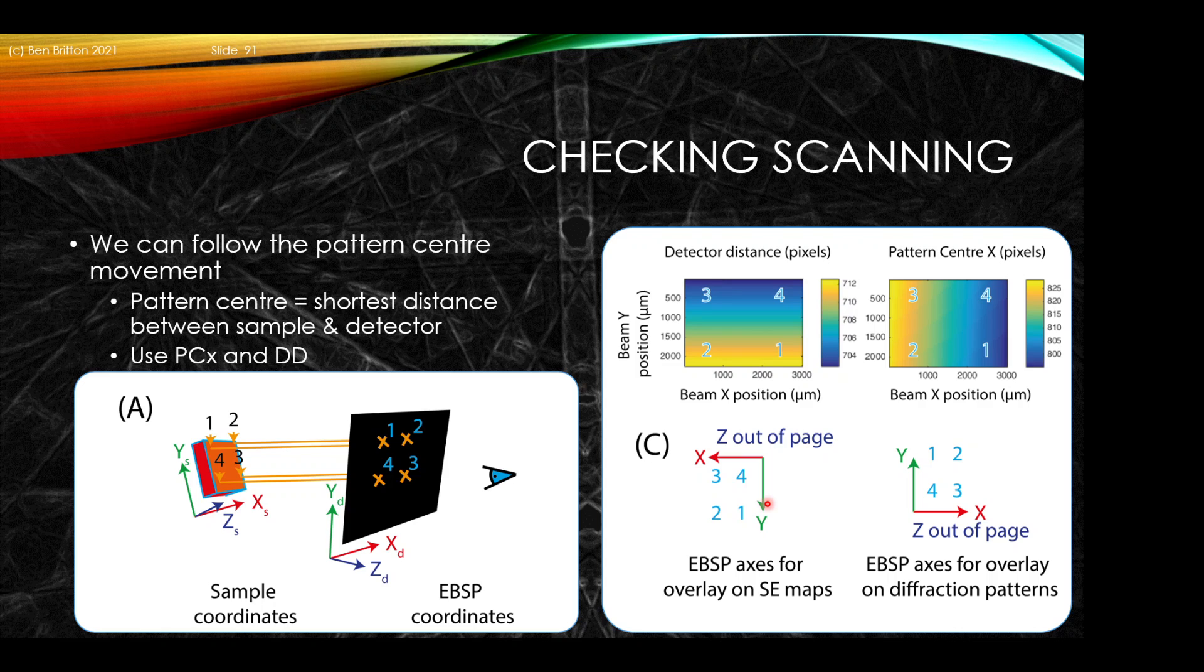So that shows we have Y pointing up the sample. If we look at the X convention as we move across this detector, this is the short X, this is the longer X. The pattern is moving from short to long. So we see the X is pointing on our sample on top of the SEM from right to left, and Z is pointing out of the plane of the page. Some may ask why we have not used PCY. There is an ambiguity between different software families, whether you count from the top or bottom of the diffraction pattern. That's why we've used the detected distance instead.